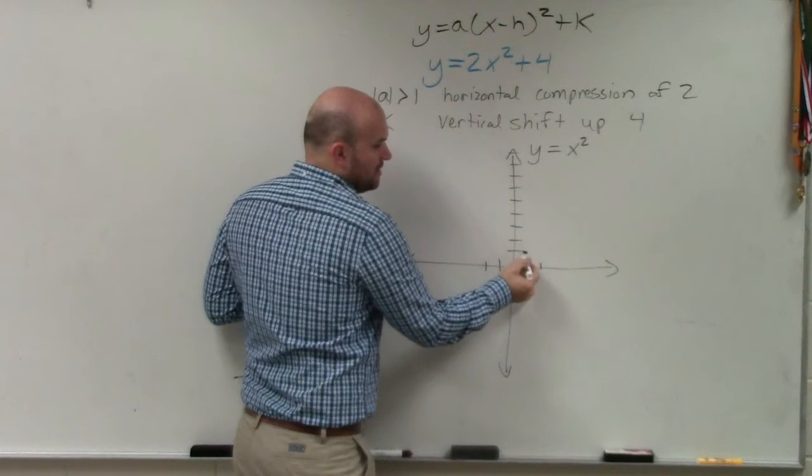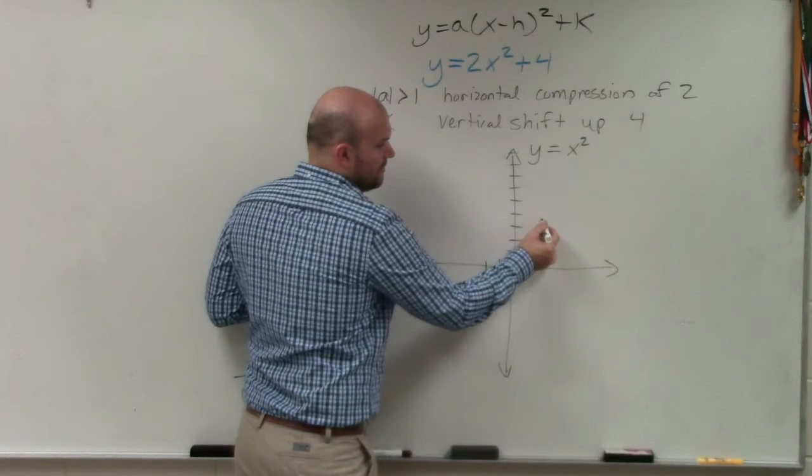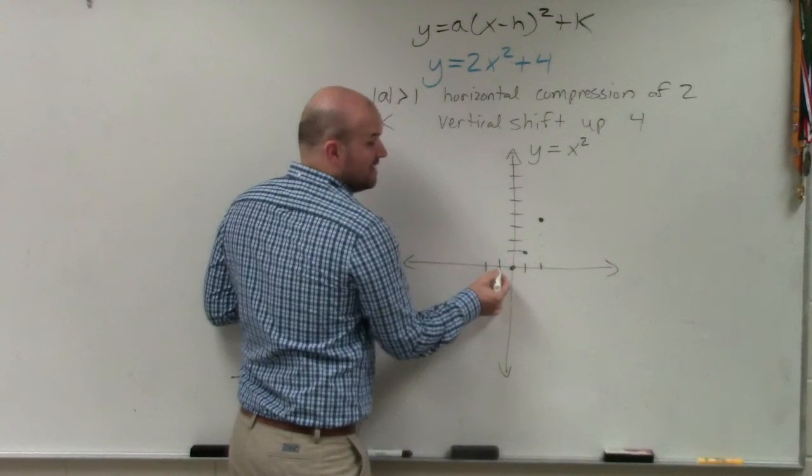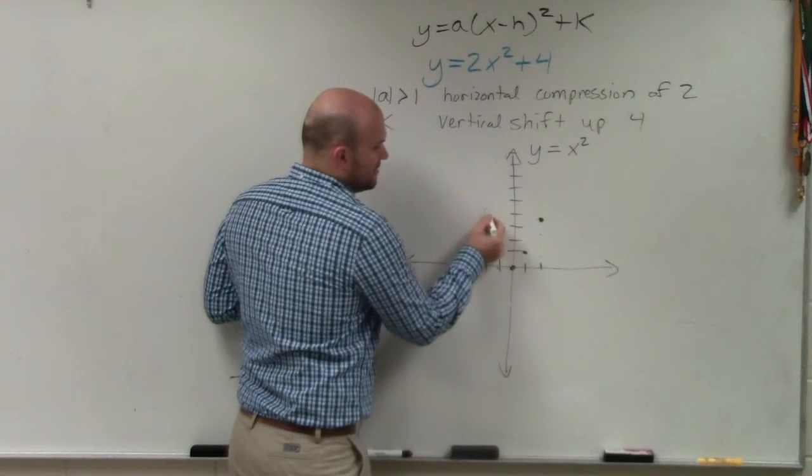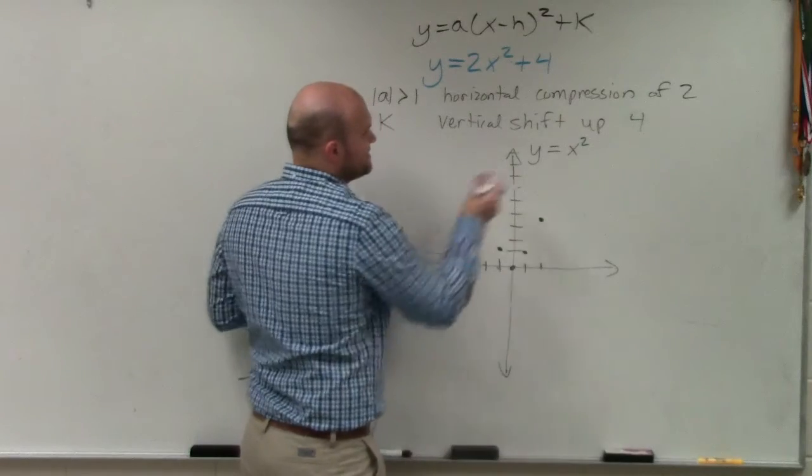If you were to plug in 2, 2 squared is 4. If you were to plug in negative 1, negative 1 squared is 1. Negative 2 squared is 4. You can see that these are reflective about the axis of symmetry.